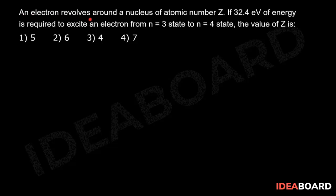An electron revolves around a nucleus of atomic number Z. If 32.4 electron volts of energy is required to excite an electron from n=3 state to n=4 state, the value of Z is: